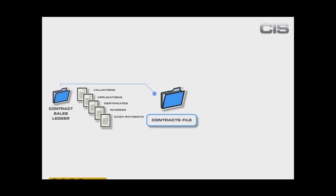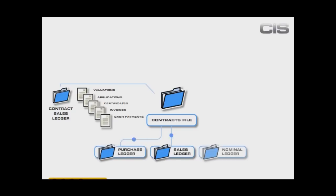Pegasus CIS is fully integrated into the account system. Sales invoices and cash payments entered into Pegasus CIS will be posted to the sales ledger. There is no re-keying of any information entered into Pegasus CIS. All transactions entered will be posted to the account system, whether that's into the sales, purchase, nominal ledgers, payroll, or cash book.